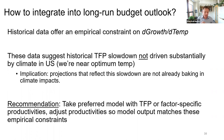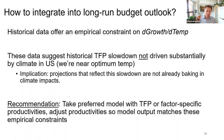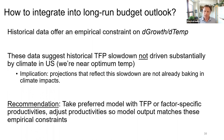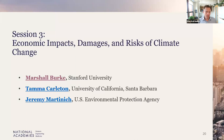So projections that reflect the TFP slowdown are not already baking in climate impacts. The recommendation is to take your preferred model — with TFP or factor-specific productivities — and adjust those productivities so that the model output matches the empirical constraints in the data. From what I understand about what CBO is doing, this is very close to their approach, and I think that's great.